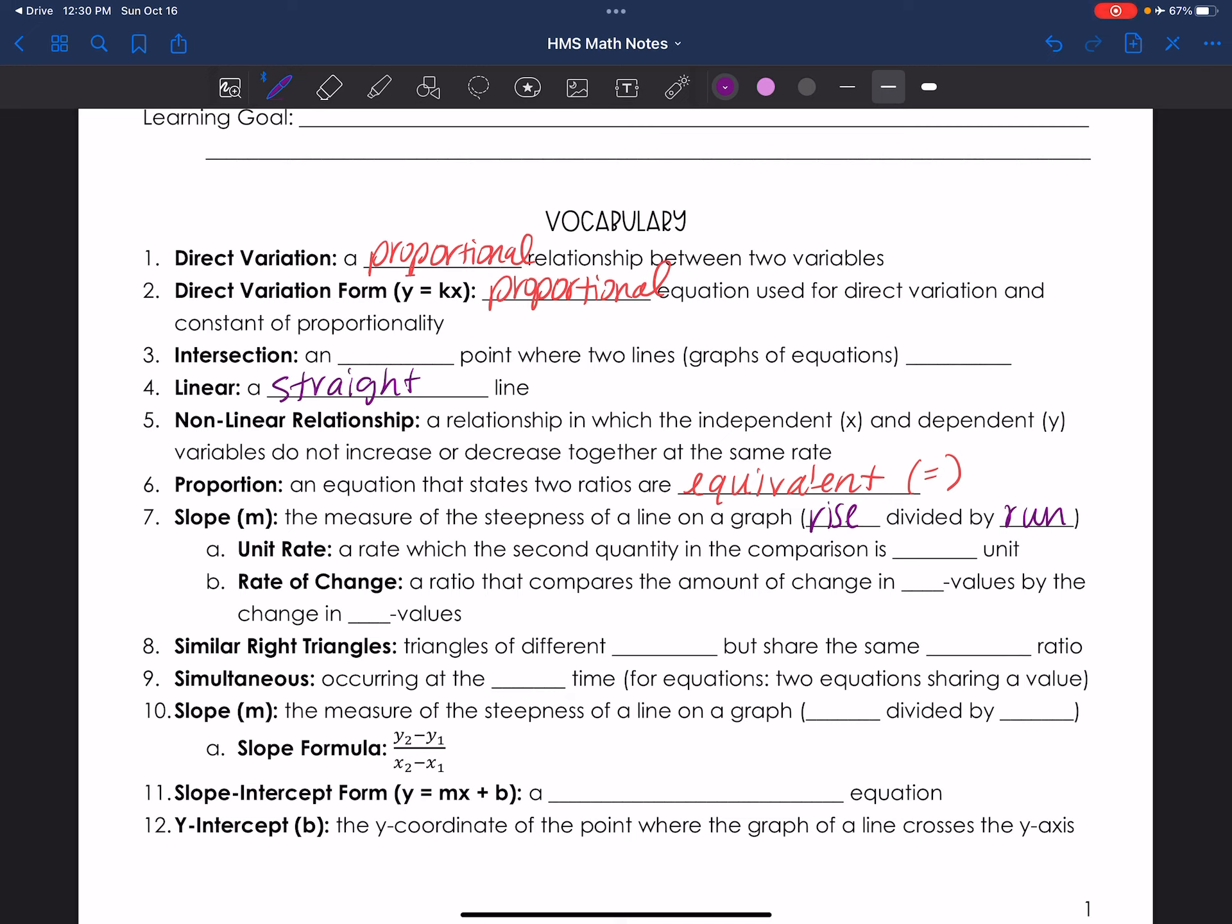Unit rate is actually what we talked about on Monday when we talked about varies directly and direct variation. It is a rate which the second quantity in the comparison is the same unit? No. Constant unit? No. I already forgot that vocabulary word. But I do know the next one. Rate of change is a ratio that compares the amount of change in Y values by the change in X values. Oh, one unit at Palmer. The unit rate is comparing one unit. Of course. I knew that.